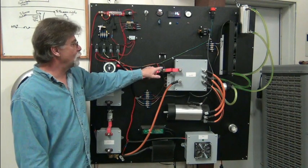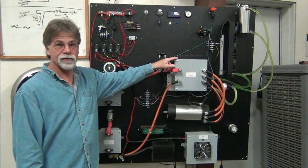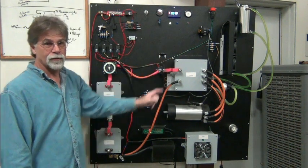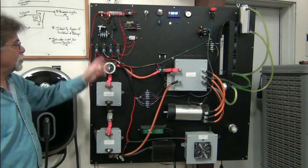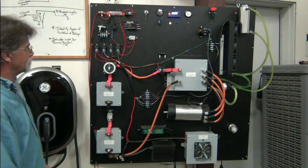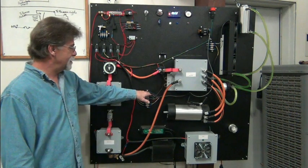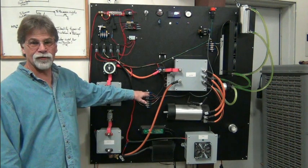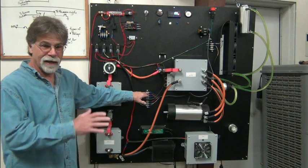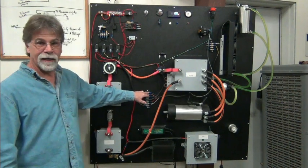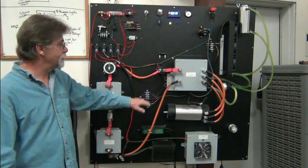What controls this contactor is the controller. So the sequence is we turn on the ignition and we get our 12 volts here. If all of our safety features, none of those are triggered, we get a 12 volt KSI signal.